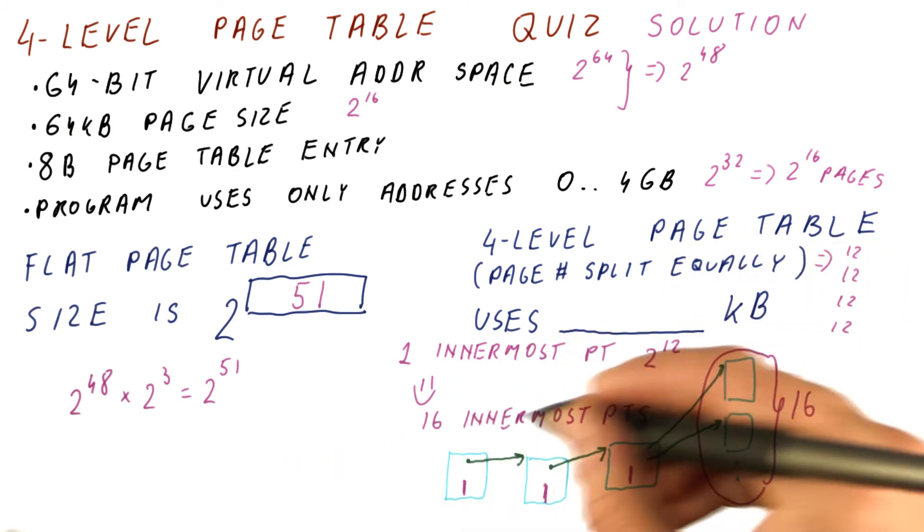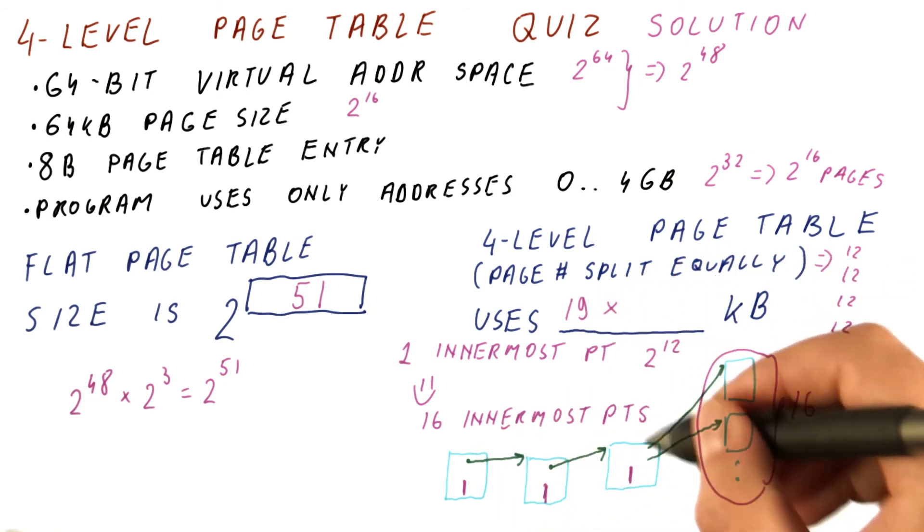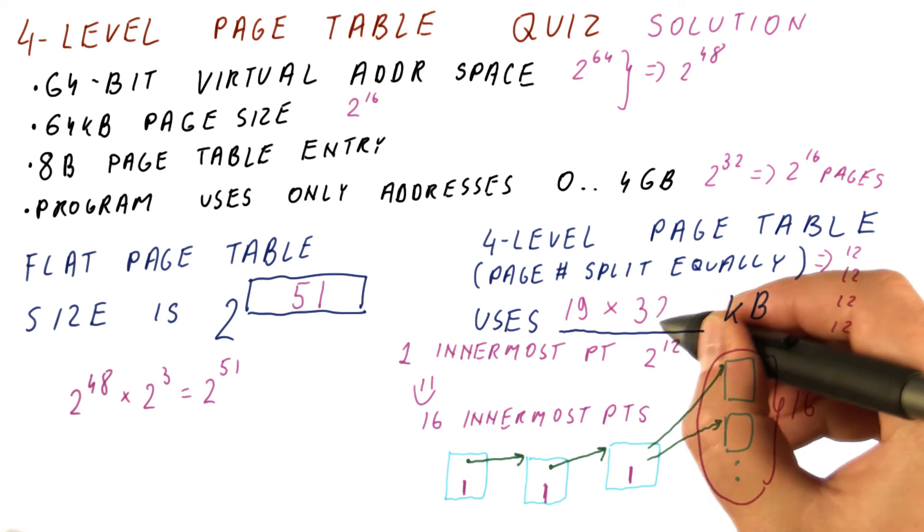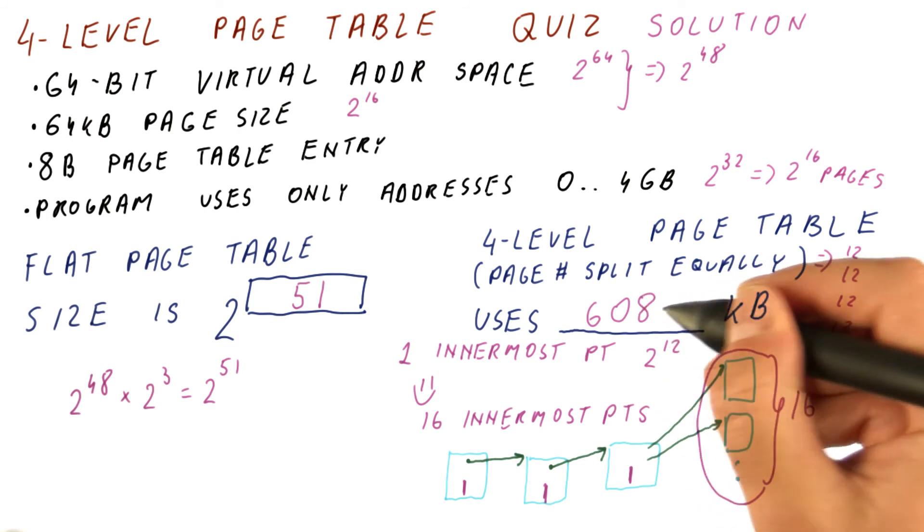So overall, we have 19 page tables at various levels, each of which is 32 kilobytes. So the solution here is 19 times 32, so the final answer is 608 kilobytes.